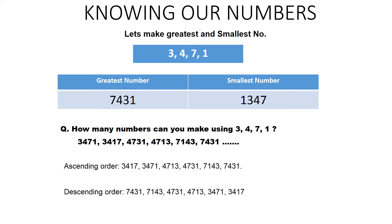Now, if you have to arrange these numbers in ascending order and in descending order, how do we start? For ascending order, we go from small to big. To select the smallest number first, we look at the thousands place of each number. In the first two numbers, the thousands place digit is 3, which is the smallest.